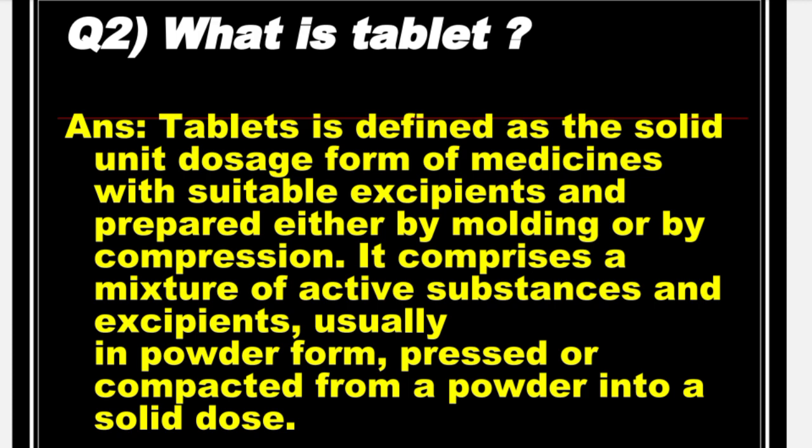Next is: What is a Tablet? Answer: A Tablet is defined as the solid unit dosage form of medicines with suitable excipients, prepared either by moulding or by compression. It comprises a mixture of active substances and excipients, usually in powder form, pressed or compacted from a powder into a solid dosage form.